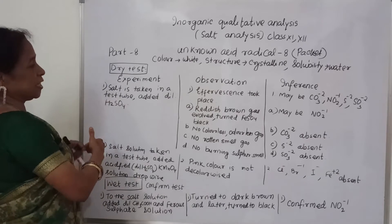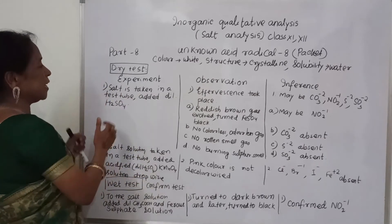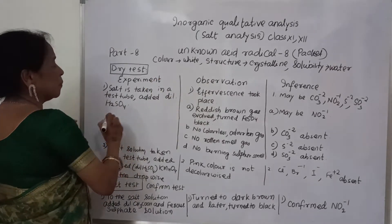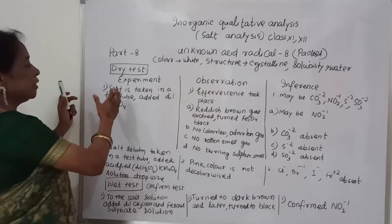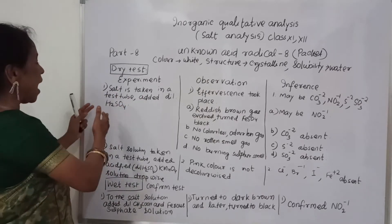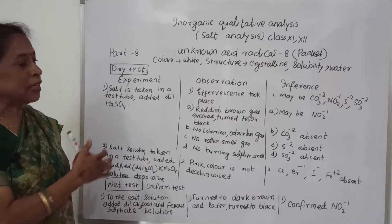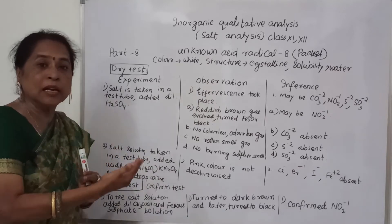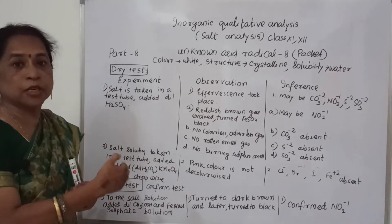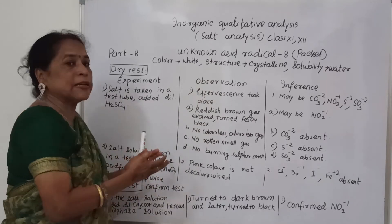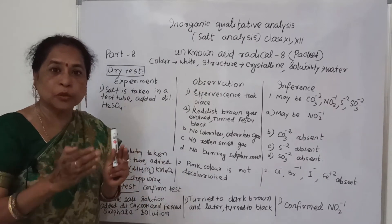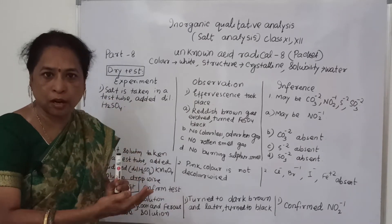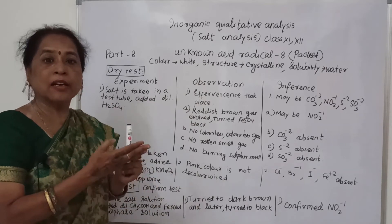Now I will do dry test and wet test. In the dry test, the first test is the dilute sulfuric acid test. The salt is taken in a test tube and dilute sulfuric acid is added. What I observe: effervescence takes place, some reaction takes place, and a colored or colorless gas is formed.